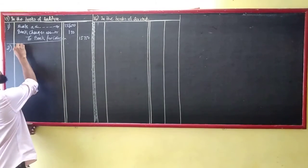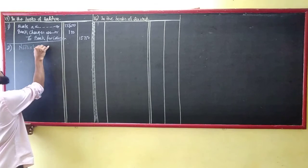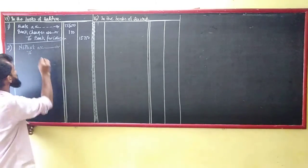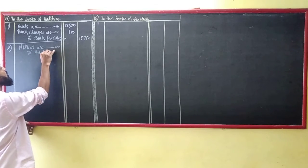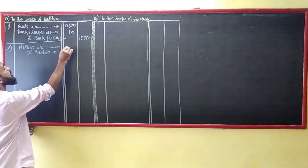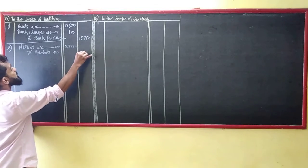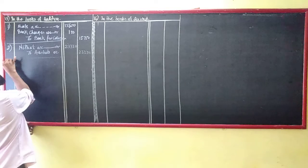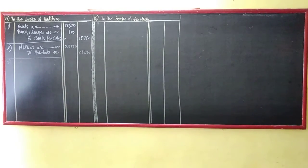Nisha's account, debit. To Asha's account, 23,330. Being endorsee's bill dishonored and noting charges paid.